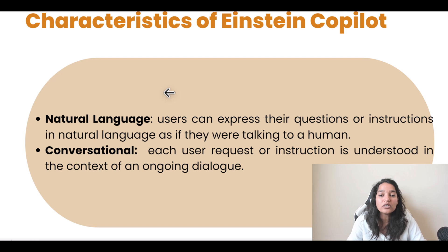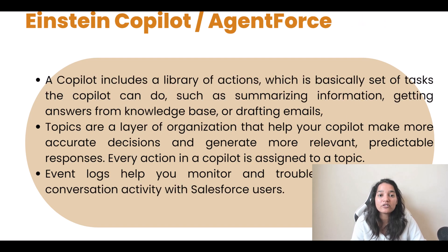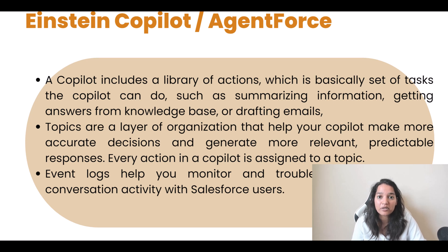You also need to understand the different points related to Agent Force, which is another name for Einstein Copilot. A copilot includes a library of actions, which is basically the set of tasks the copilot can do — such as summarizing information, getting answers from a knowledge base, or drafting emails. Actions are two types: standard and custom. Standard are what is already given to you out of the box.